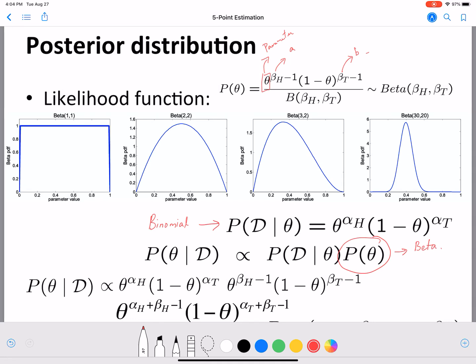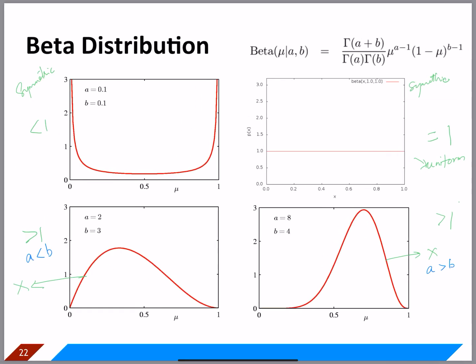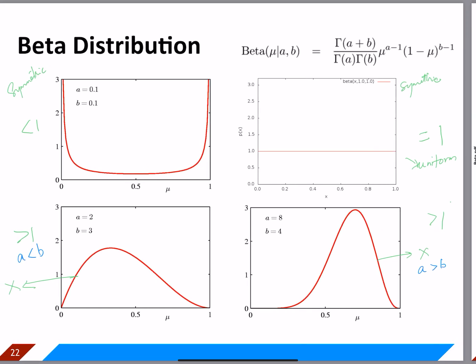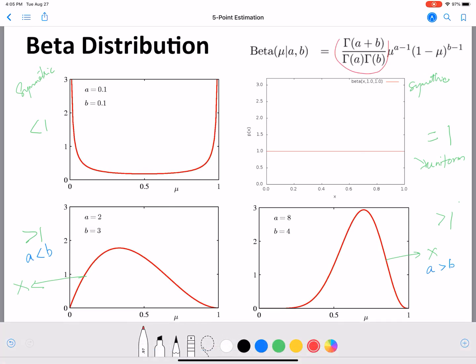From the beta distribution equation, the key terms are theta raised to beta_h minus 1 and 1 minus theta raised to beta_t minus 1. There is also a normalizing term in front involving the gamma function, which we will call B. This normalizing term contains no parameter terms — the only parameter terms in the beta distribution are the ones involving theta.